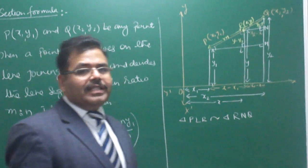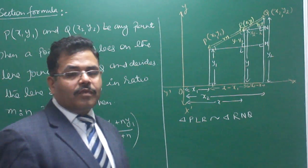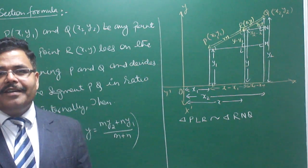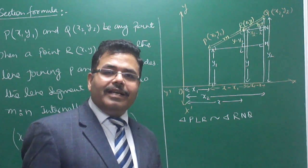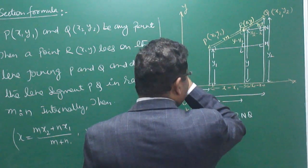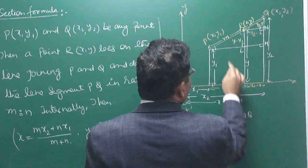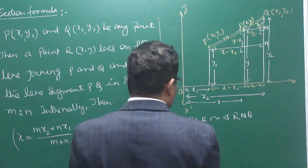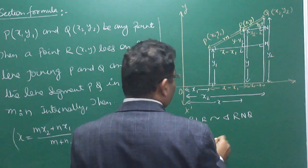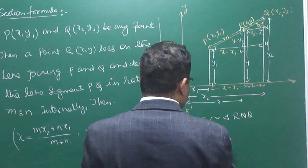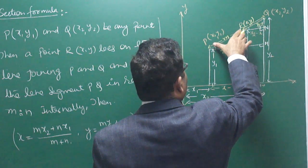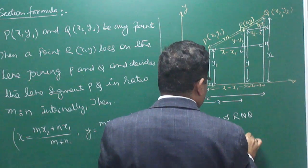Because the triangles are similar, their corresponding sides are proportional — this you have studied in an earlier session. So since two triangles are similar, their corresponding sides are proportional. Therefore: (x − x1)/(x2 − x) = (y − y1)/(y2 − y) = M/N. These are three relations: relation 1, 2, and 3.